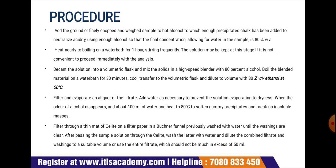The solution may be kept at this stage if it is not convenient to proceed immediately with the analysis. Decant the solution into a volumetric flask and mix the solids in a high-speed blender with 80% alcohol. Boil the blended material on a water bath for 30 minutes, cool, and transfer to the volumetric flask. Dilute to volume with 80% volume by volume ethanol at 20 degrees Celsius. Filter and evaporate the filtrate, adding water as necessary to prevent the solution evaporating to dryness. When the odor of alcohol disappears, add about 100 ml of water and heat to 80 degrees Celsius to soften gummy precipitates and break up insoluble masses.